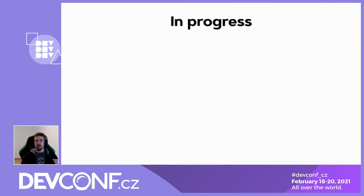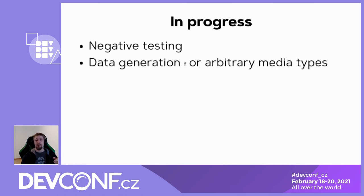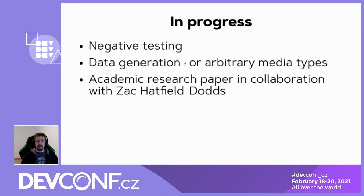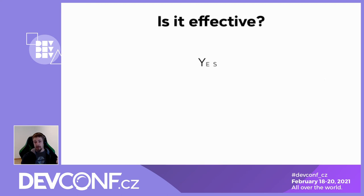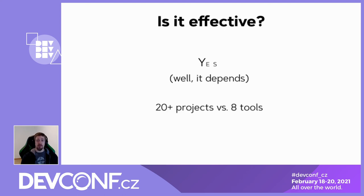There are a few features in progress. At the moment I'm working on negative testing — it will be possible to exercise negative testing scenarios, and to automatically generate XML or binary formats like images. I'm also involved in academic research about web API fuzzing, in collaboration with Zac Hatfield-Dodds, who is a Hypothesis core developer. The main question we want to answer is whether this approach is effective at all. The short answer is yes, but the longer version is that it depends on many factors including schema complexity and how precisely it defines inputs. We are still running our experiments and evaluating the results.